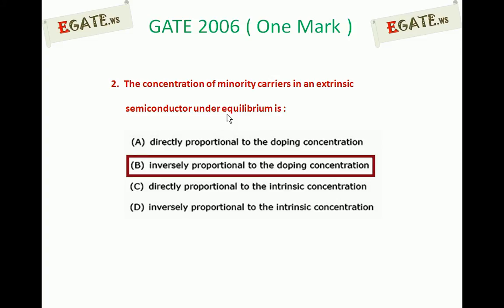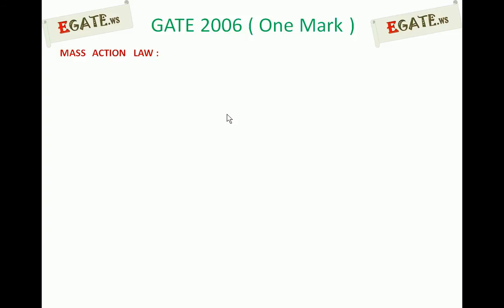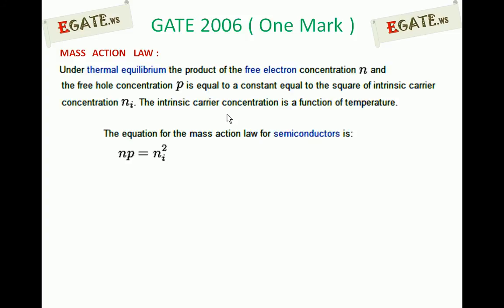We will see the details. Minority carriers are calculated using the mass action law in semiconductors. Mass action law states that under thermal equilibrium, the product of the free electron concentration and free hole concentration is equal to a constant, equal to the square of intrinsic carrier concentration, represented as Ni. So simply by equation, mass action law is: n × p = Ni².